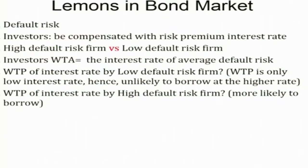Similar problems can arise in the bond market as well. One of the factors associated with bonds is default risk. If an investor considers purchasing a corporate bond instrument in the bond market, the interest rate must be high enough to compensate the investor for the average default risk of both good and bad firms trying to sell the debt — only then will the investor buy a bond. So the investor should be compensated with a risk premium interest rate. The market comprises firms with high default risk and firms with low default risk.